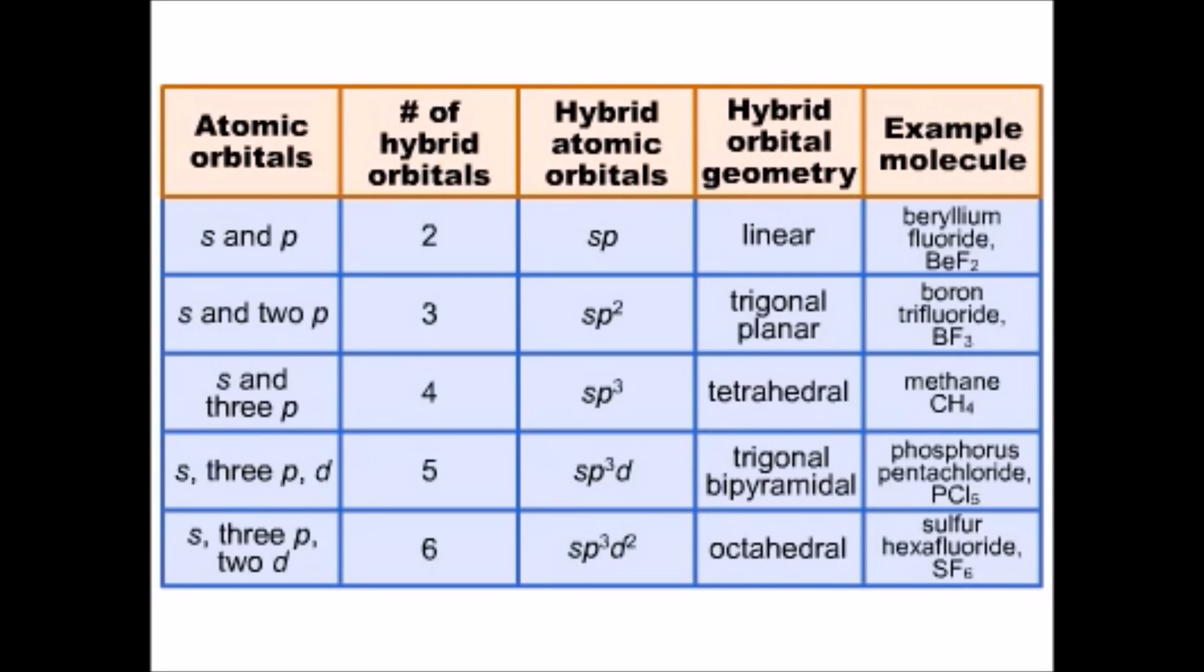We looked at the five basic types of hybrid atomic orbitals: SP, SP2, SP3, SP3D, and SP3D2.